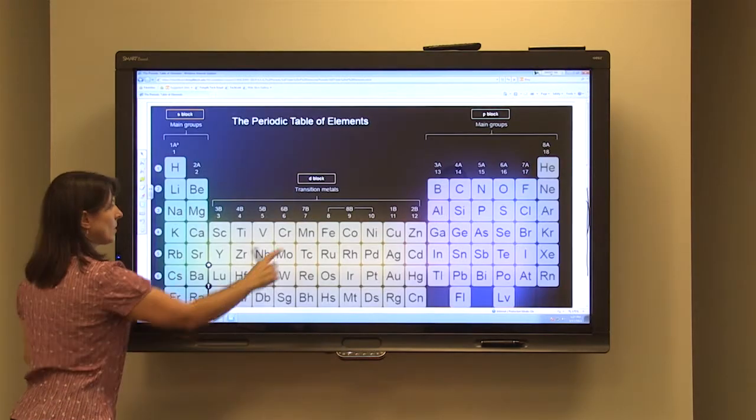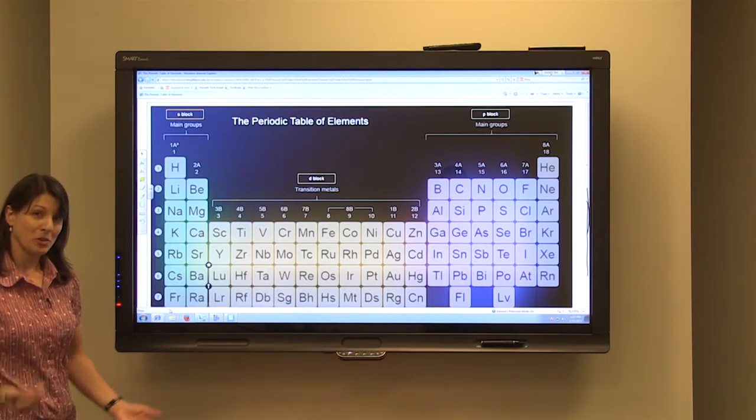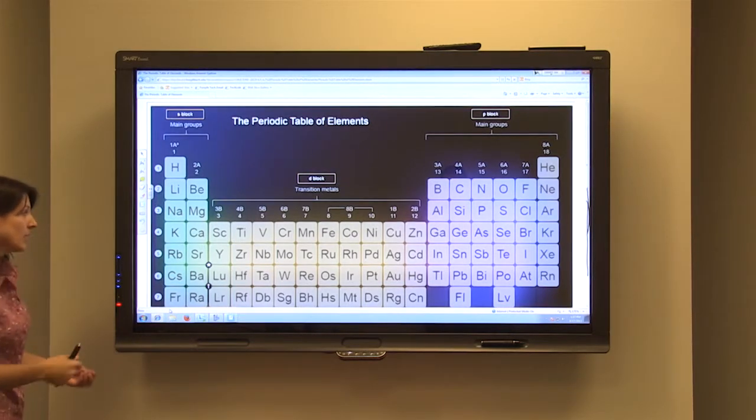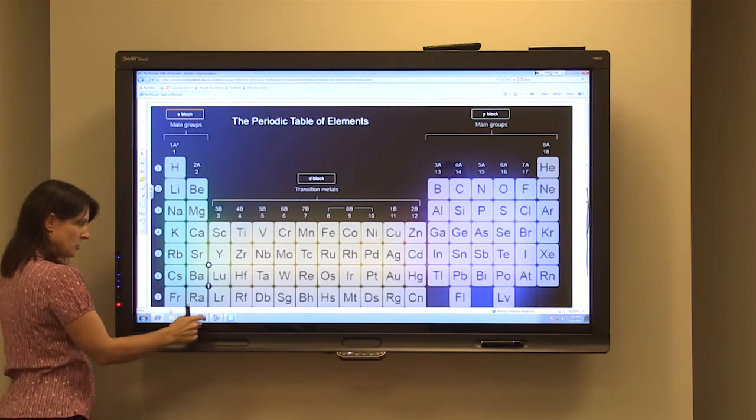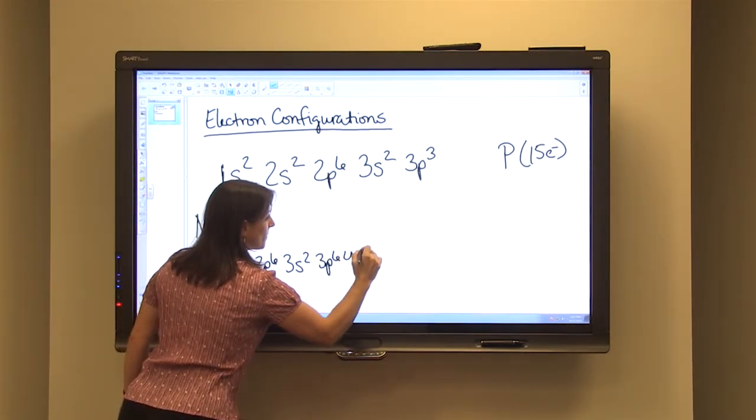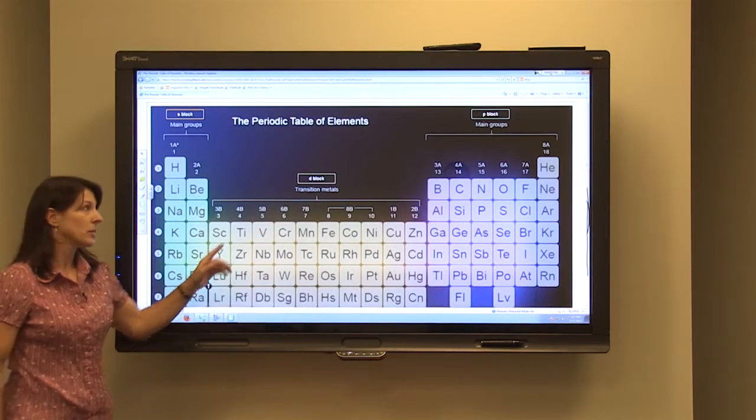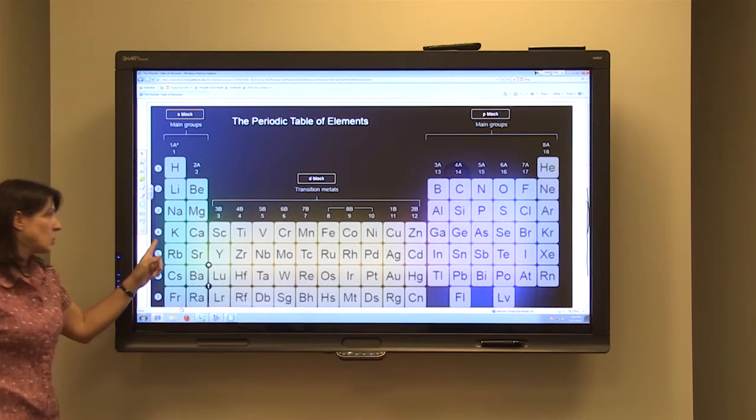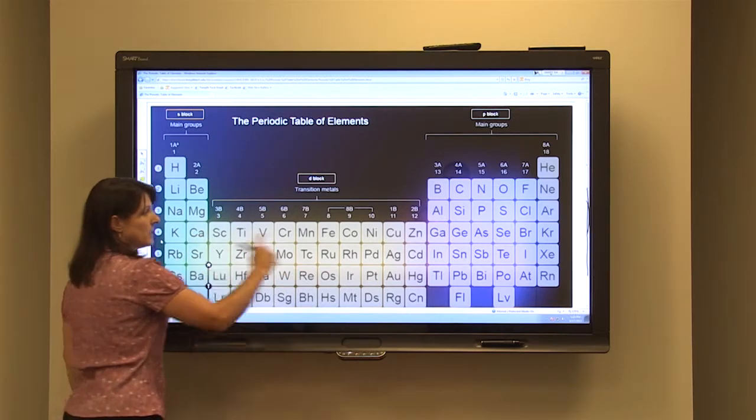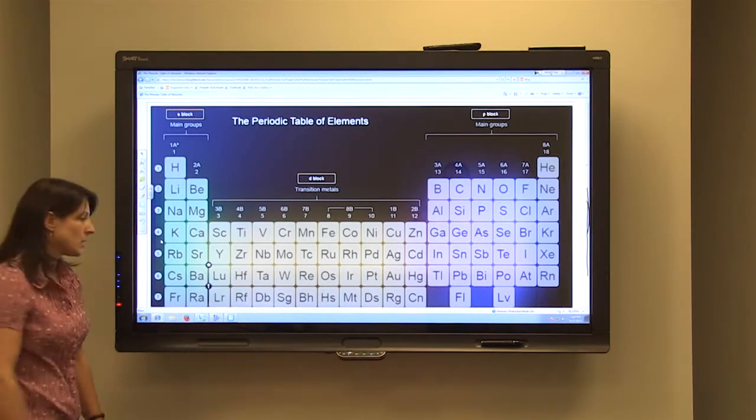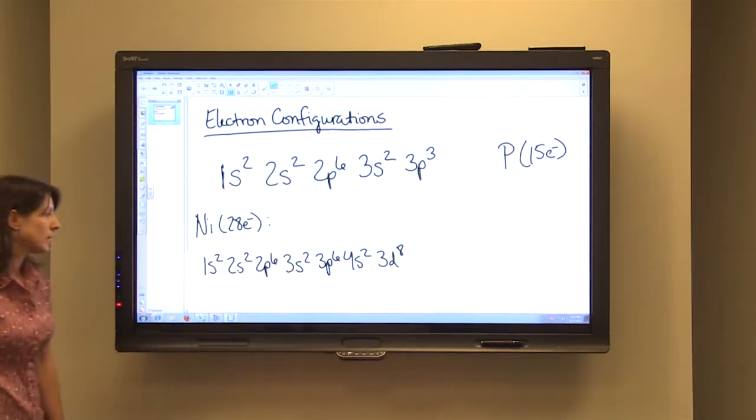After 3p⁶, we start on the fourth row. Now 4s is actually going to come before 3d. So that is not in order in terms of the levels, but we are going to follow the periodic table across. So 4s, the first two. After 4s is when we start the D-block elements. And as I mentioned earlier, the energy level for the D-block elements is one less than the period number. So this is actually going to be 3d. And the nickel is the 8th element over in the 3d sub-level. So we're going to put our level, sub-level, and the number of electrons in that sub-level.